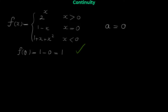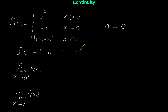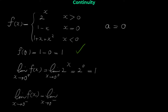Now we check the second condition: the limit of f of x when x approaches 0 should exist. Since we have different rules on each side of 0, we find the right and left limits separately. For the right limit, we use 2^x: plugging in 0 gives 2⁰ = 1. For the left limit, we use 1 + x + x²: plugging in 0 gives 1 + 0 + 0 = 1.